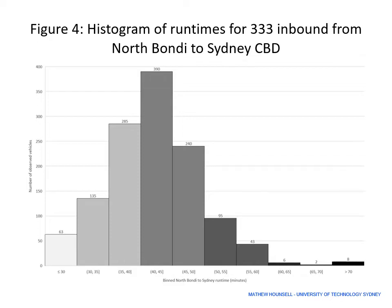This histogram plots run times on the horizontal axis and the number of services with that run time on the vertical axis. The majority of run times were between 40 and 45 minutes, and there were some run times between 55 and 60 minutes. However, there was also a significant number — 63 services — with run times below 30 minutes, showing that a 30-minute run time is achievable; it's just that private car traffic was prioritised over buses.